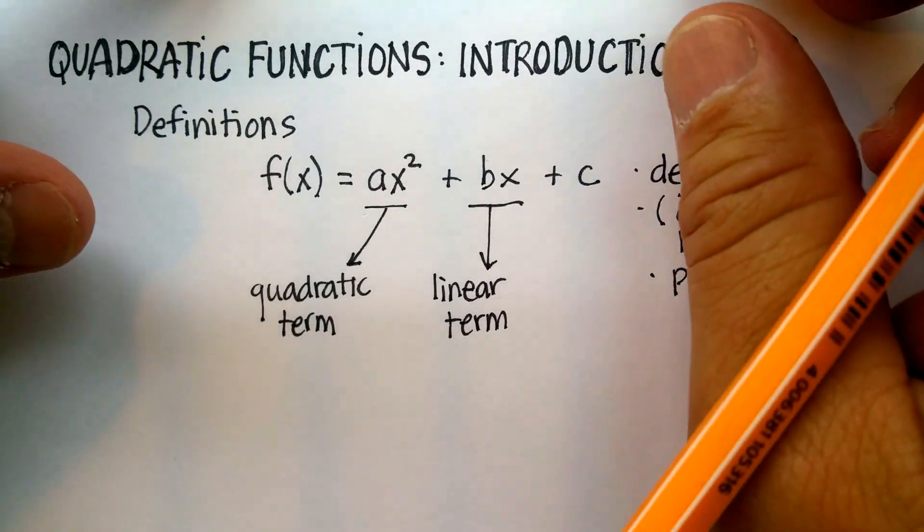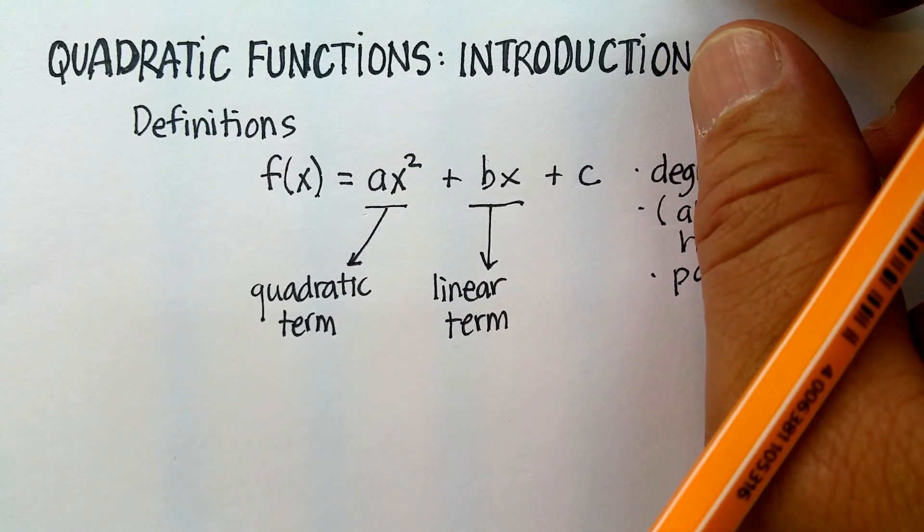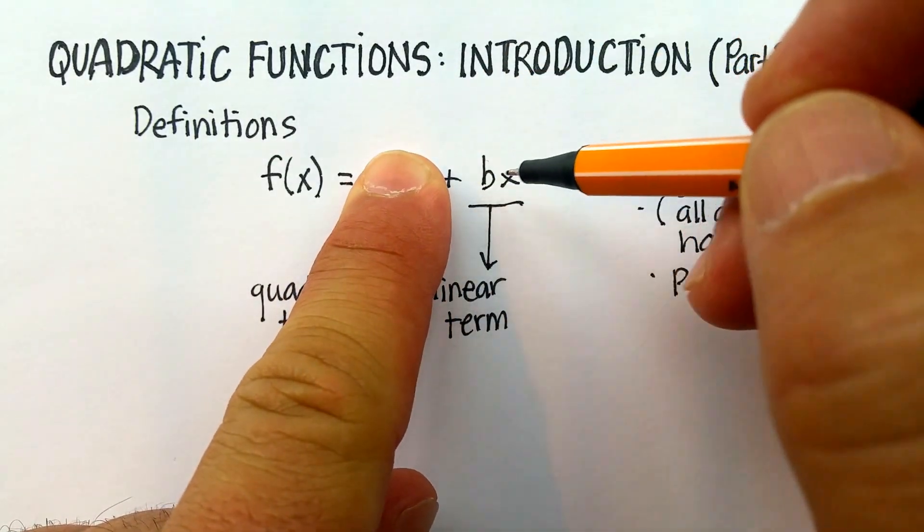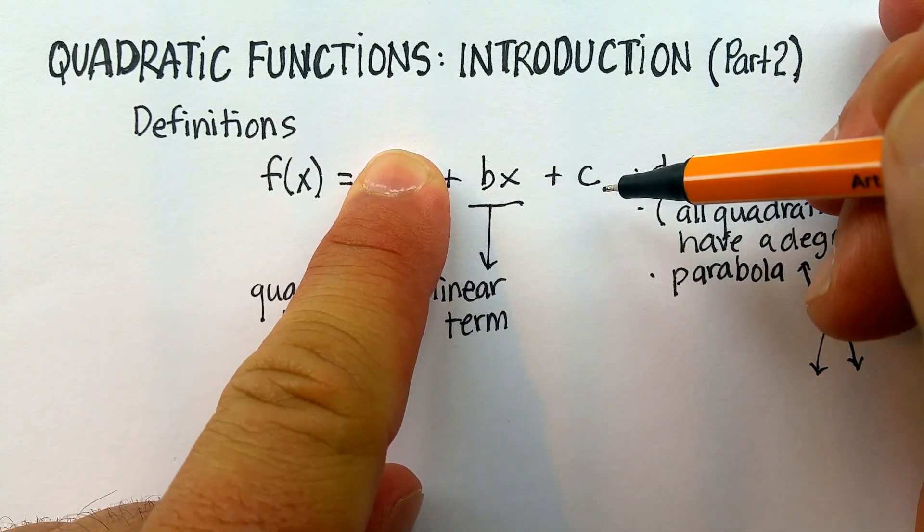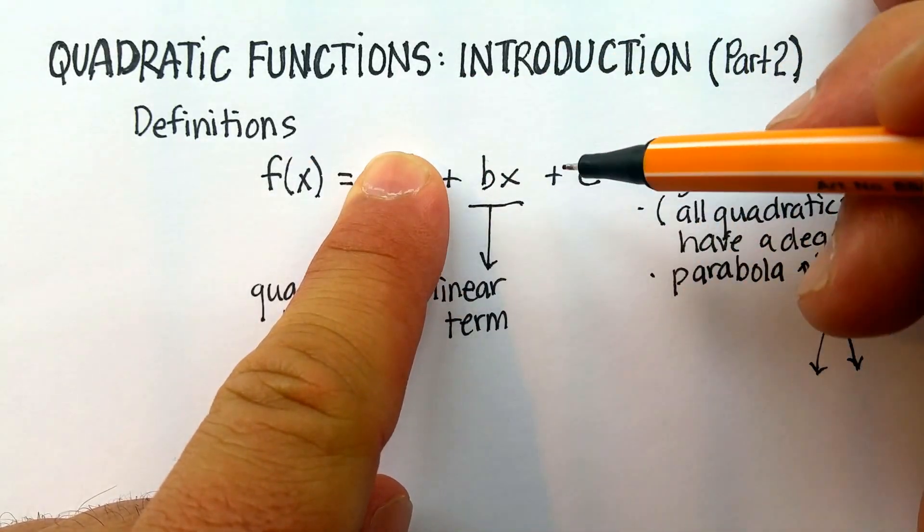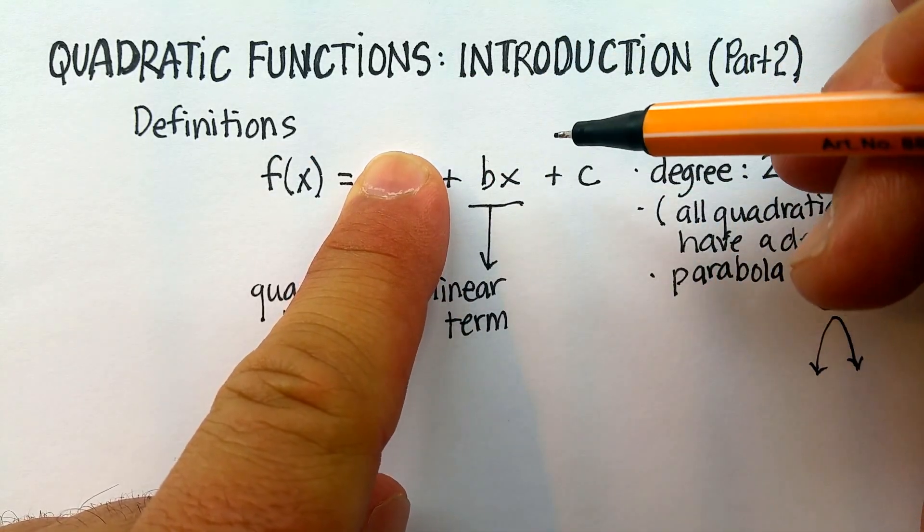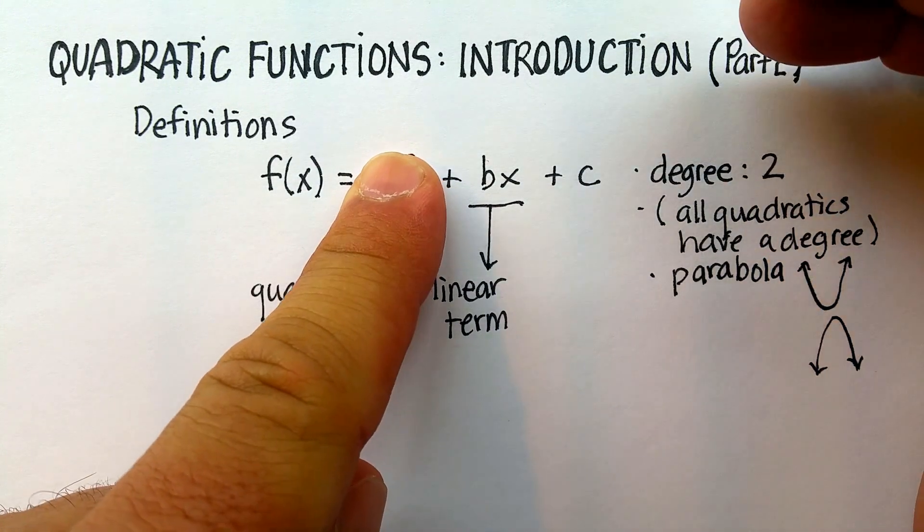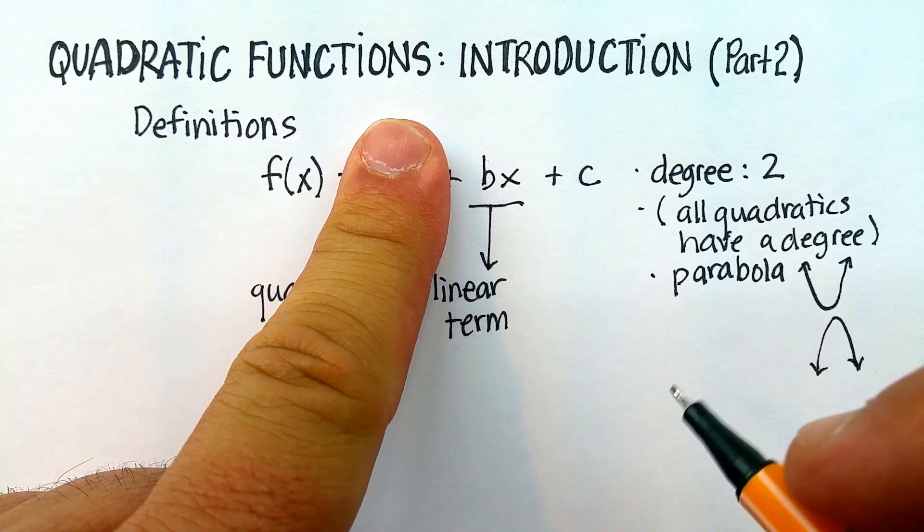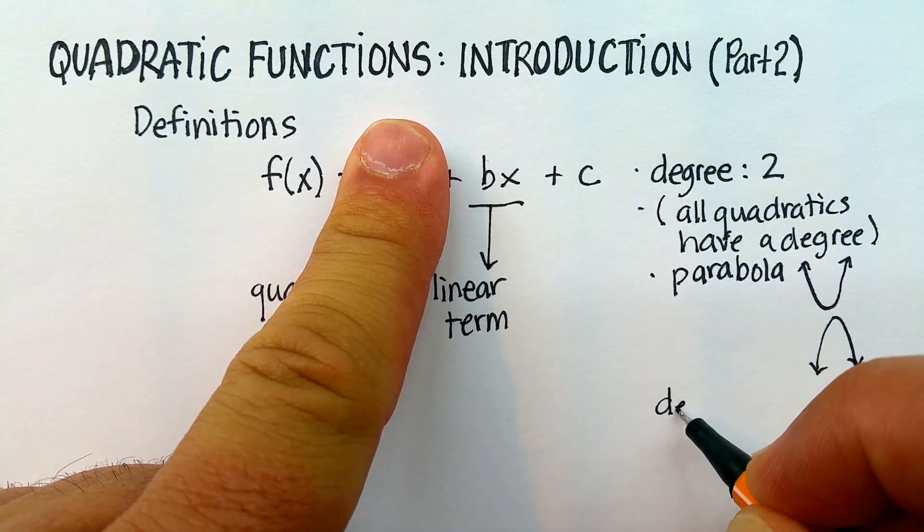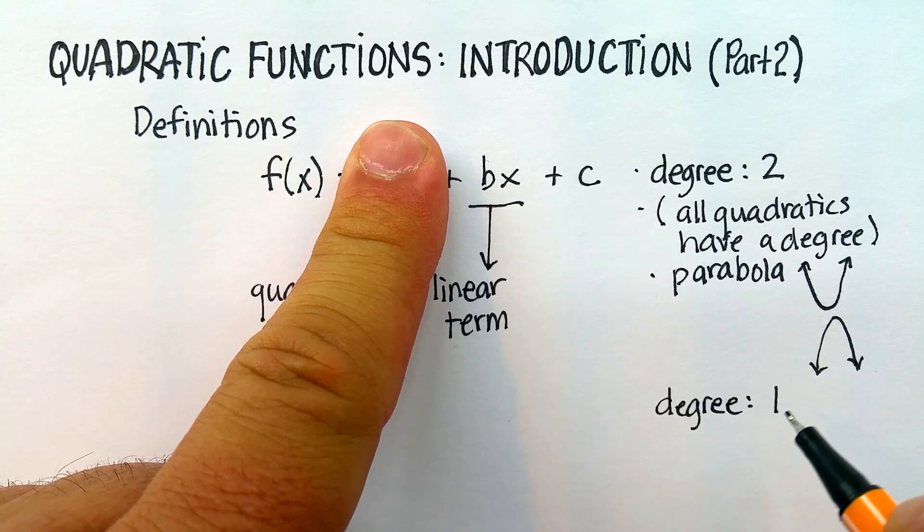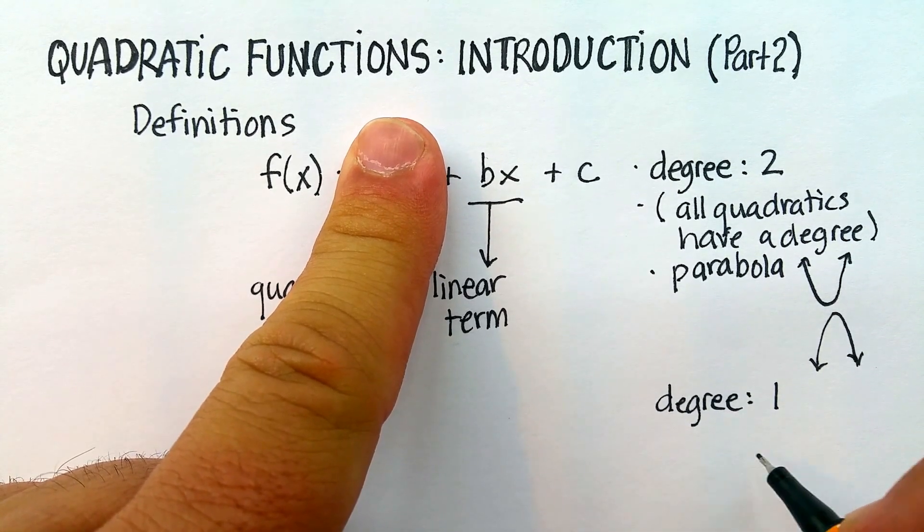If I were to get rid of the quadratic term, and I just said f of x or y is equal to bx plus c, what does that sound like to you? y is equal to mx plus b, with just slightly different naming variables, right? Linear term, linear equation. And remember that a degree of one, or a linear equation, which we never really talked about, has a degree of one, but it has a straight line.